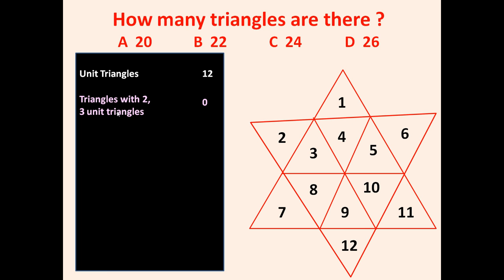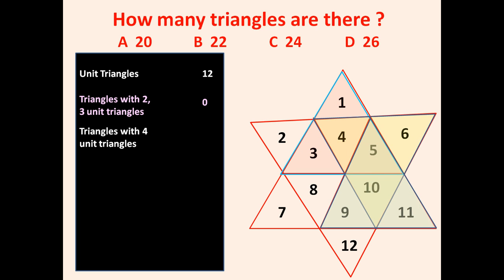Using three triangles, can you make a triangle? No. So those are zero, because you cannot make a triangle using three unit triangles. Now, can you make a triangle with four unit triangles? Yes — using these four unit triangles a bigger triangle is formed. How many such triangles can be formed? One, two, three, four, five, and six — so total six triangles can be formed using four unit triangles.